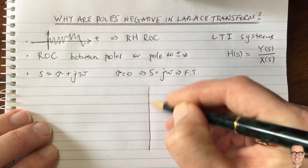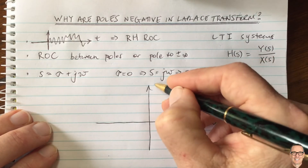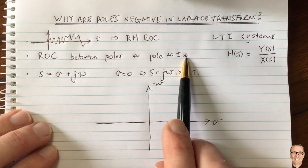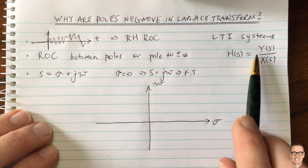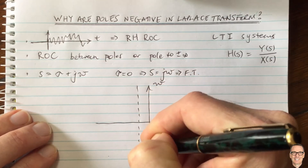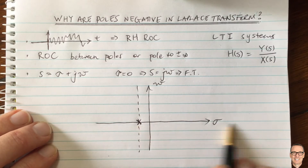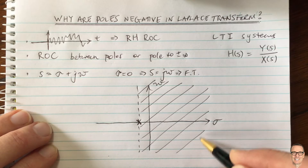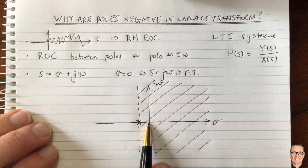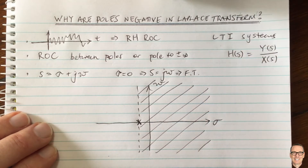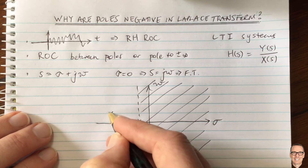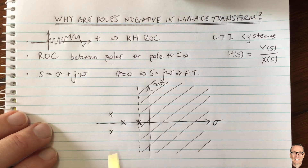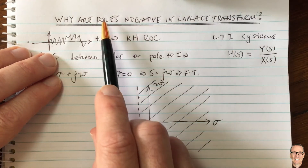Putting all these things together: the region of convergence in the s-plane — which is σ and jω — must be a right-hand half plane, must go from a pole to infinity, and must include the jω axis so that the system is stable. For a causal, stable impulse response, the pole closest to positive infinity needs to be negative, so that the region of convergence, which is a right-hand half plane, includes the jω axis. All other poles must be more negative than that pole. That's why we're most often interested in designing our systems to have negative poles.